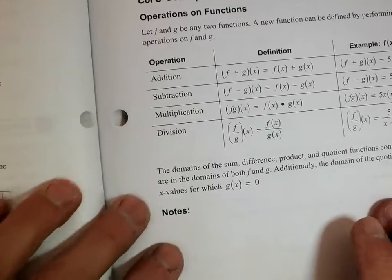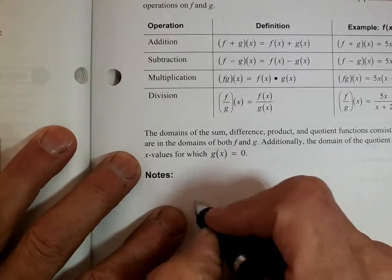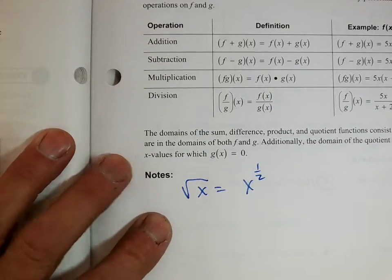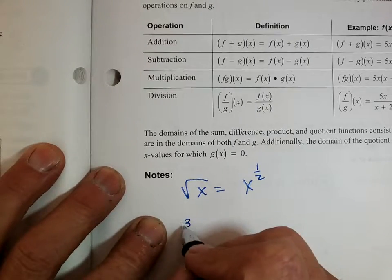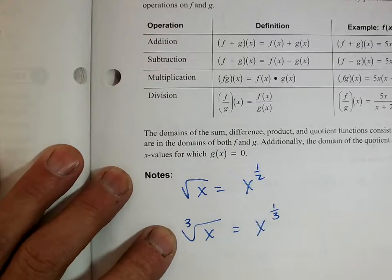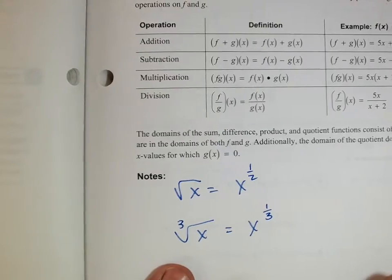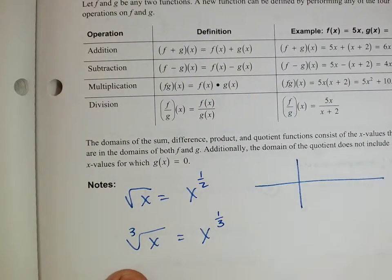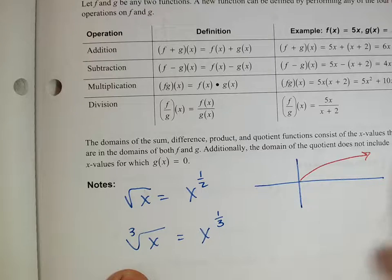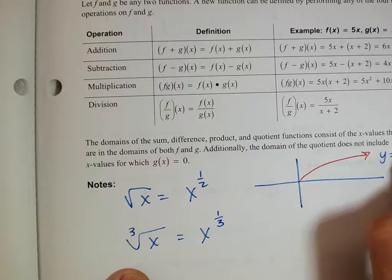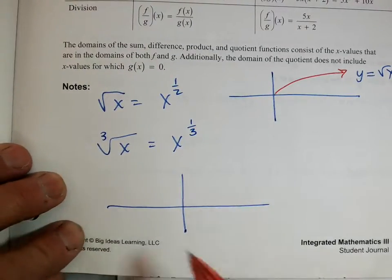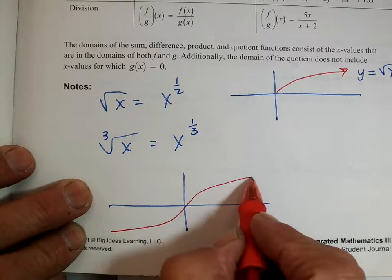Now on notes, before we go anywhere, let's make a little note. Write this down: square root of X is the same as X to the 1/2 power. Cube root of X is equal to X to the 1/3 power. We've looked at these graphs — a square root graph looks like this, that's Y equals the square root of X. And a cube root graph looks like this; that's the parent function.